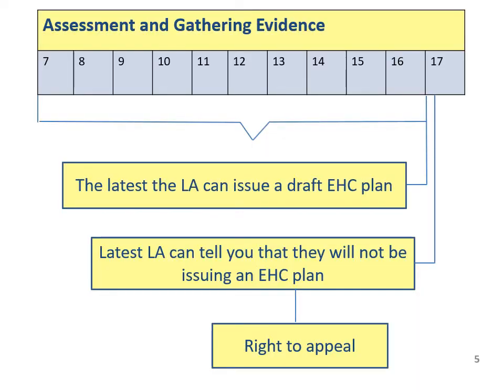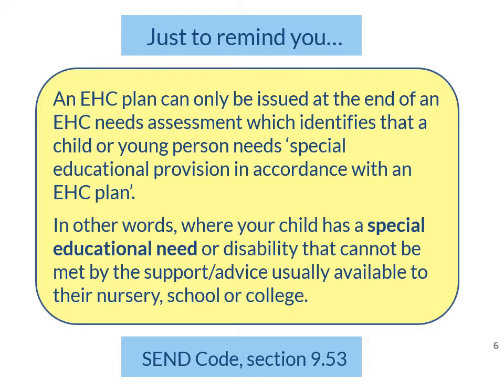If you've watched our earlier videos, you will know that if the local authority decides that they will issue an EHC plan, they must do so by week 17. An EHC plan can only be issued at the end of an EHC needs assessment which identifies that a child or young person needs special educational provision in accordance with an EHC plan — in other words, where your child has a special educational need or disability that cannot be met by the support and specialist advice usually available to their nursery, school or college.